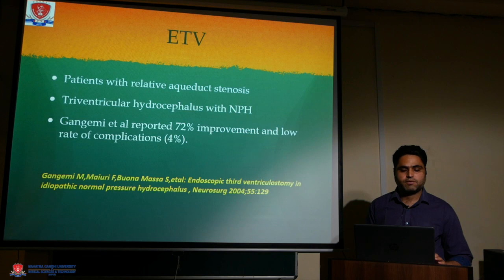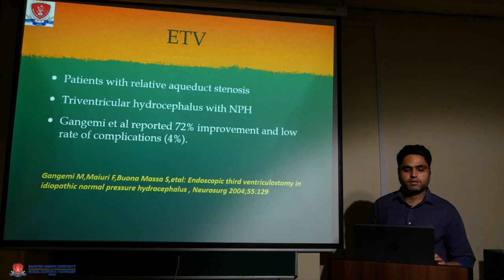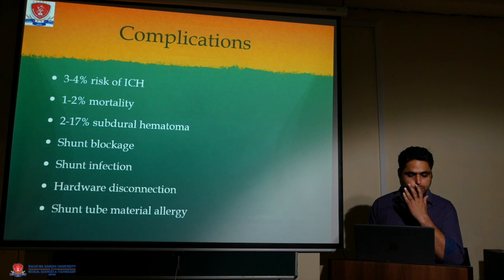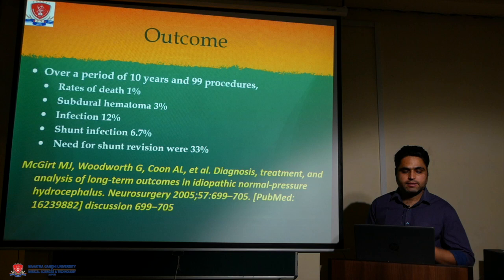For triventricular hydrocephalus with normal pressure hydrocephalus, Gangemi et al. reported 72% improvement with a low rate of complications with ETV. Complications of shunting include a 3–4% risk of intracranial hemorrhage, 1–2% mortality, 2–17% subdural hematoma, shunt blockage, shunt infection, hardware disconnection, and shunt tube metallic material allergy.